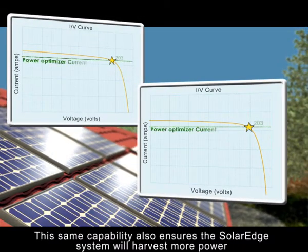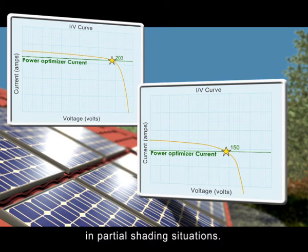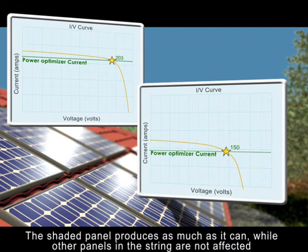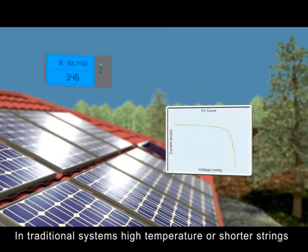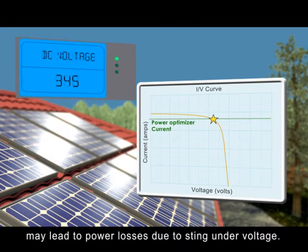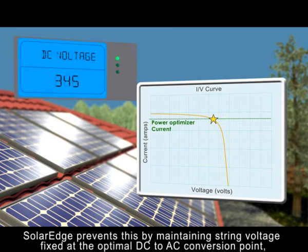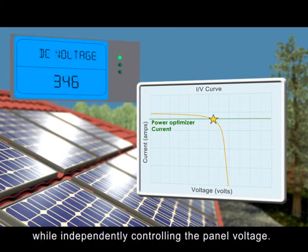This same capability also ensures the SolarEdge system will harvest more power in partial shading situations. The shaded panel produces as much as it can, while other panels in the string are not affected and continue to produce at their maximum peak point. In traditional systems, high temperature or shorter strings may lead to power losses due to string under-voltage. SolarEdge prevents it by maintaining string voltage fixed at the optimal DC to AC conversion point, while independently controlling the panel voltage.